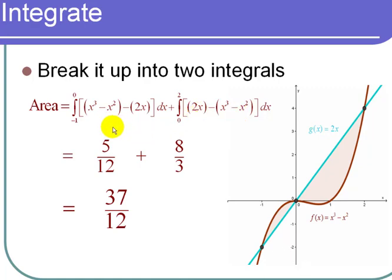When I do that, I can use a calculator on this or do this by hand. When I work that out, this first integral is 5/12 and the second integral is 8/3. I add them up and I get 37/12 for the total area of the region that's bounded by these two curves. And I'm finished with the problem.